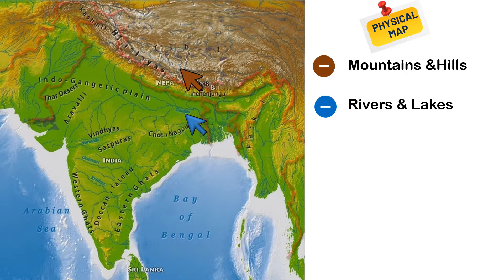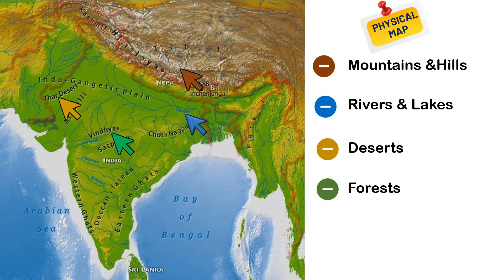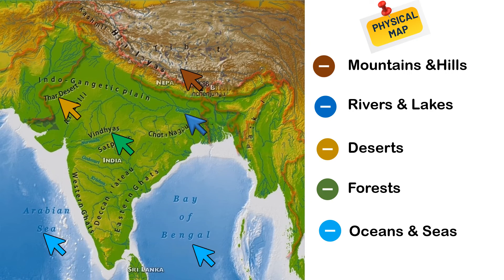The next element is desert, typically indicated in shades of yellow or tan, highlighting arid regions. Next element, forest, represented with green, showing extensive forest areas or a single large forest. Next element, oceans and seas — large bodies of water are marked in blue, often with depth contours to indicate underwater topography.